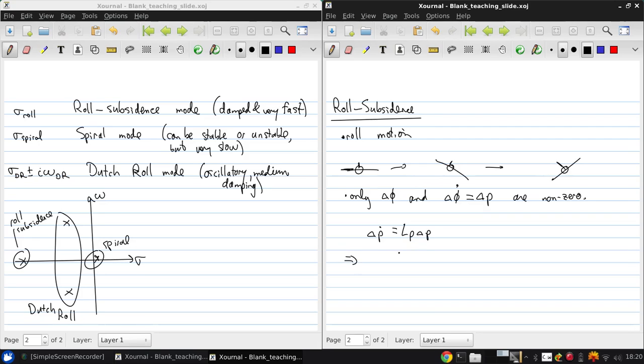So this gives a very simple solution that the frequency is zero because it's a first-order system, and the magnitude of the real part of the eigenvalue is just Lp, which is QS b squared over 2 IXX u-naught times CLp.